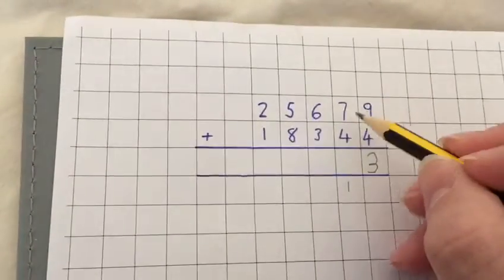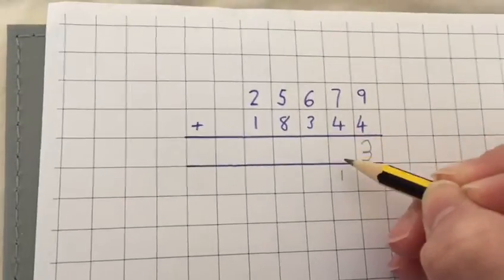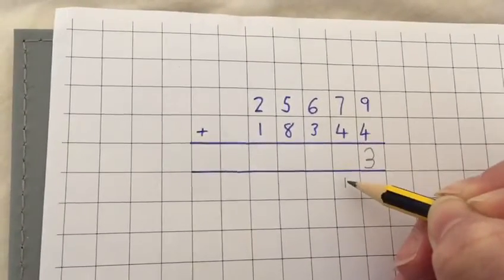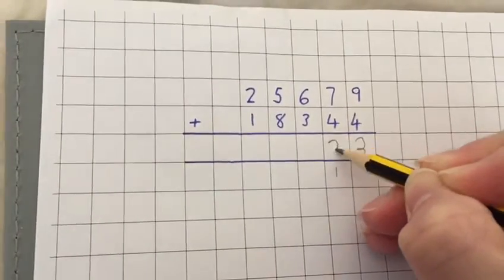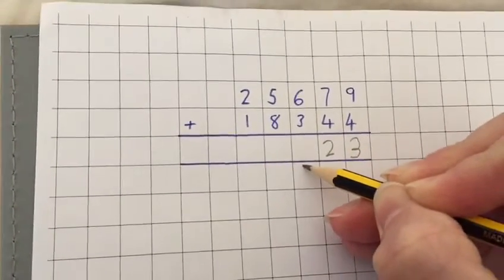The next part is now using your 7 and your 4 and then looking at the 1 you've exchanged over. So you've got 7 and 4 which is 11 and you add another 1 to it which makes 12. So your 2 will go there, your 1 will go underneath. You always make sure that your exchanging is done underneath.